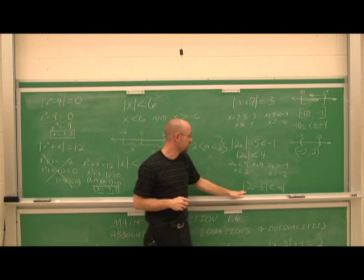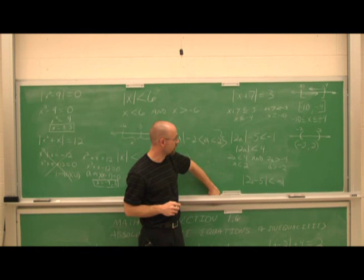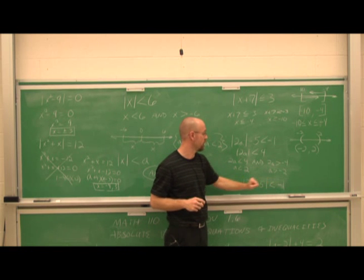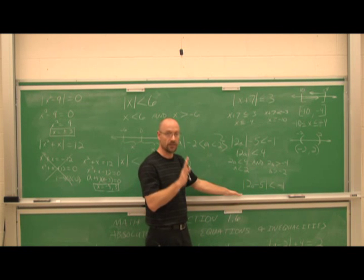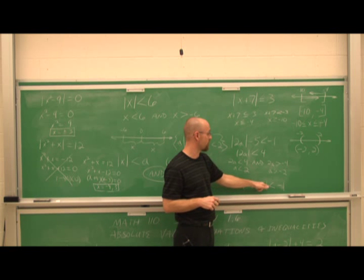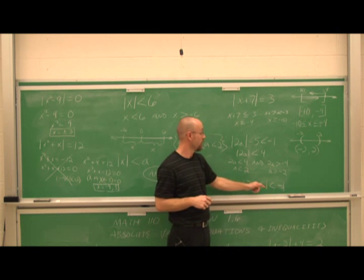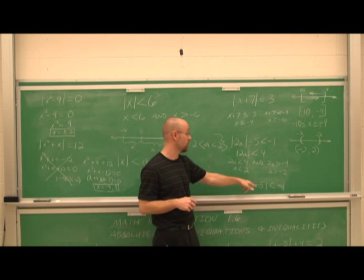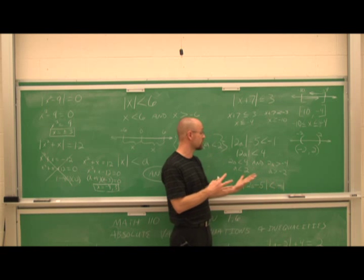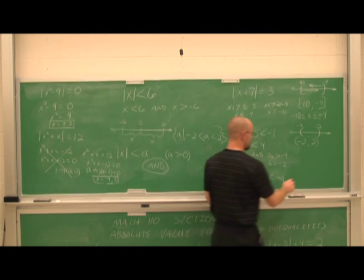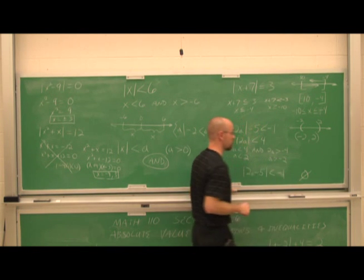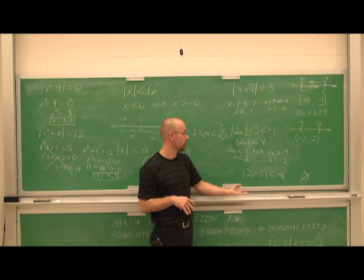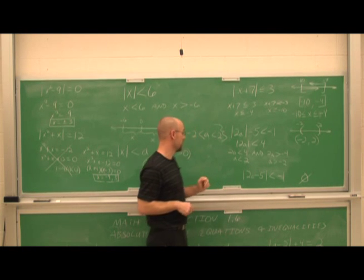What about this one? If we see that the absolute value is already isolated, and we have an absolute value less than negative 1 — let's assess it. Is an absolute value ever less than negative 1? No. Absolute values are always positive, so they're never going to be less than 0, and therefore never less than negative 1. So we can stop here and say there is no solution.